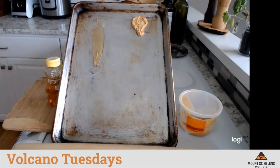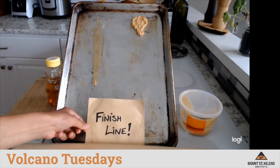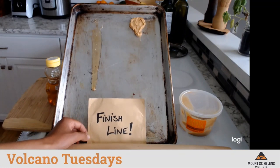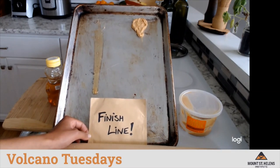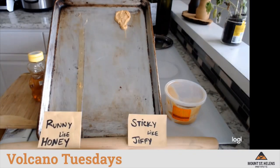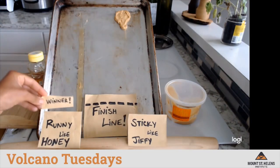Peanut butter and honey are both materials that will flow, yet their ability to flow is different based on their structure and composition. We call the ease at which a material can flow its viscosity. In this race, honey is less viscous, meaning it is easier for it to flow, and thus it is going to reach the finish line more quickly. I like to think about lava coming out of volcanoes in a similar way — sometimes the lava is thick and sticky like peanut butter, what we could call 'sticky like Jiffy.' And sometimes the lava is thin and runny — 'runny like honey.' Clearly the honey is the winner of this race.